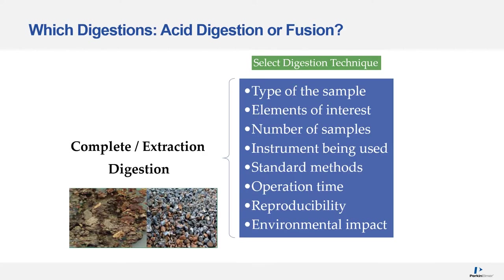It is essential to choose the correct digestion technique to get good results. Prior to choosing the appropriate method, factors to consider include sample type, elements of interest, concentration, how many samples you wish to run, and on what instrument you want to analyze them. It is important to select the digestion method for ease of operation, reproducibility, and as little environmental impact as possible.